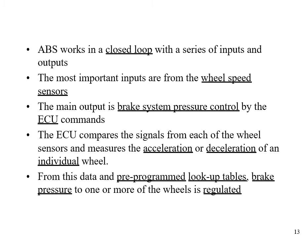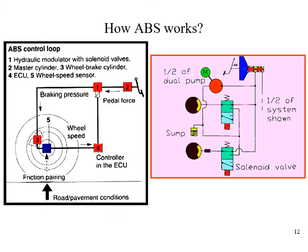The ECU decides based on wheel speed whether there is acceleration or deceleration of each individual wheel. From the data, pre-programmed lookup tables are used to regulate the brake pressure to one or more wheels. The ABS control loop includes a hydraulic modulator with solenoid valves, master cylinder, wheel brake cylinder, ECU, and wheel speed sensor. Through ECU commands, the brake pressure can be reduced, held constant, or allowed to increase.